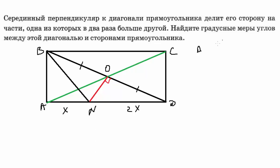Рассмотрим треугольник BND. В данном треугольнике ON является высотой, так как проведена под углом 90 градусов. С другой стороны, BO = OD, значит эта высота одновременно является медианой. Раз высота является медианой, треугольник BND — равнобедренный.